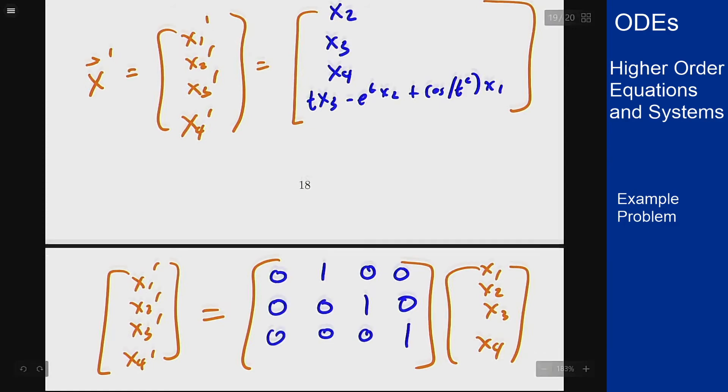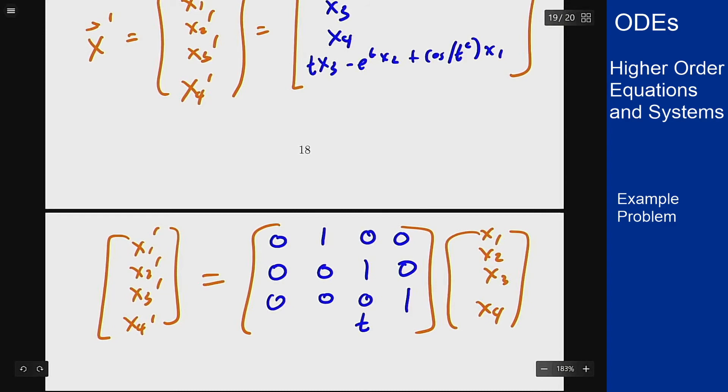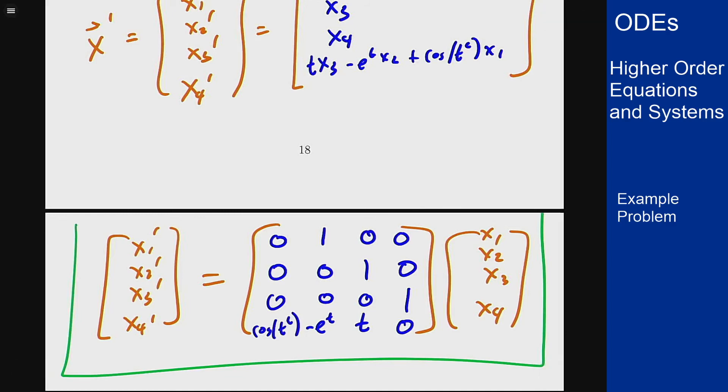Now for the last row I put the equation where they belong. So I want t times x3, so I want a t here, a 0 times x4, a negative e to the t times x2, and a cosine of t squared times x1. And that would give me the matrix form of this system that corresponds to the fourth order equation.